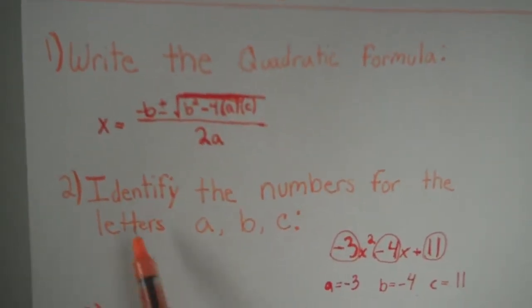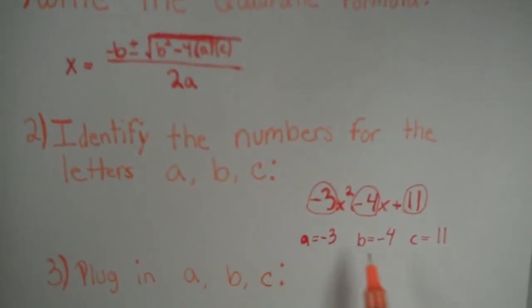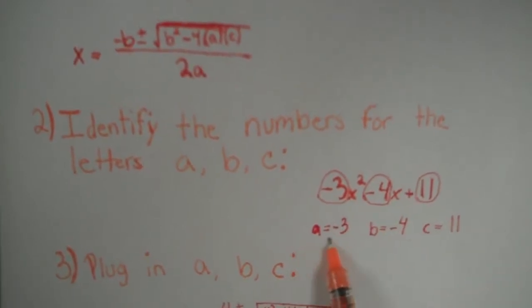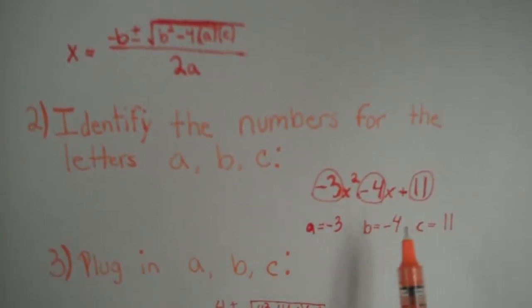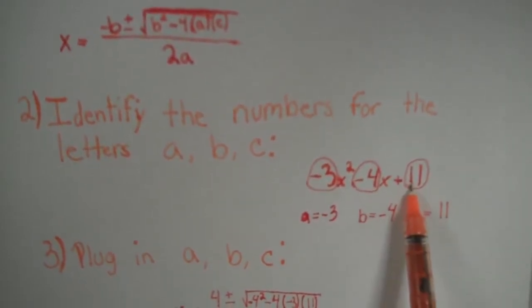Second step is to identify the numbers for the letters a, b, and c. For this particular equation, letter a would equal negative 3, letter b would equal negative 4, and letter c would equal 11.